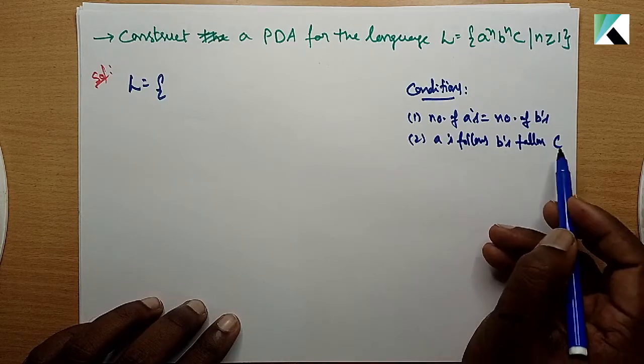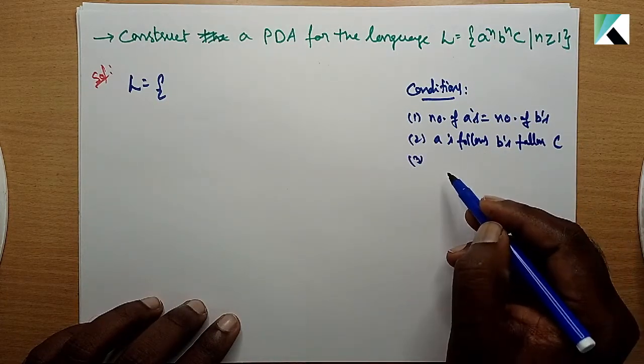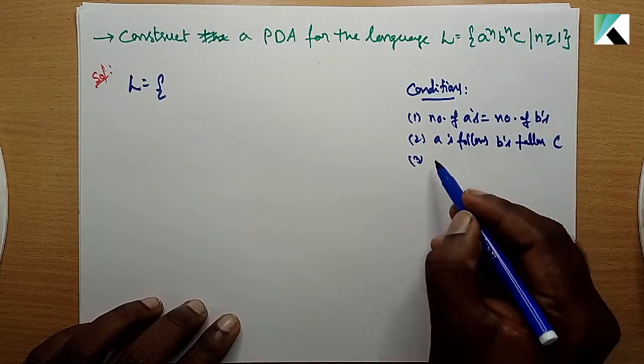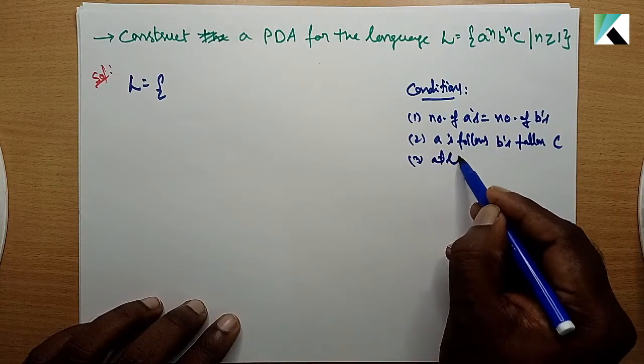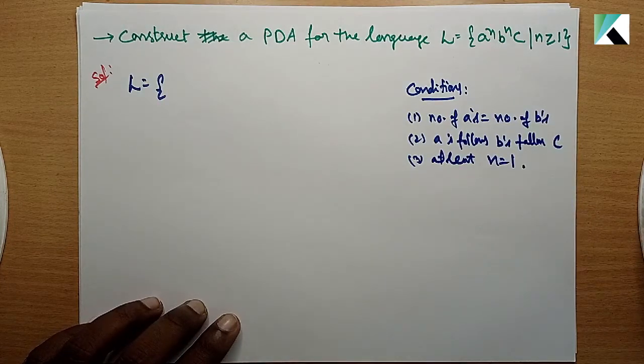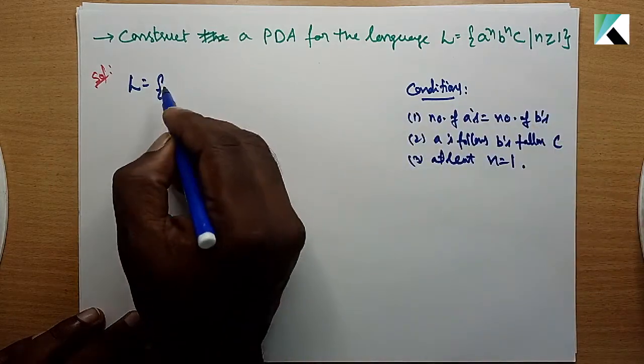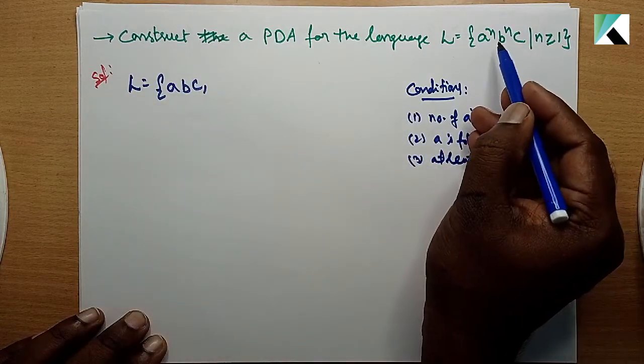A's follow B's, B's follow C, compulsory in the strings. Third, N must be at least 1. These are the conditions. When N equals 1, the first string is ABC.